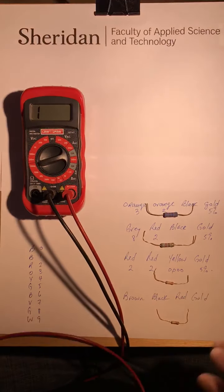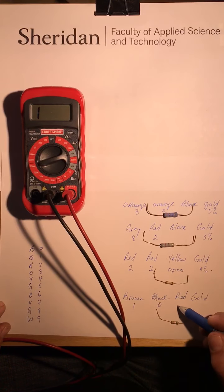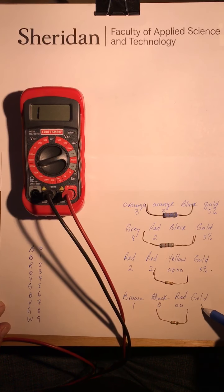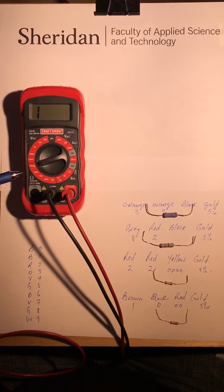In the last one here, I've got brown which is one, black which is zero, red which represents two zeros, and gold is five percent. So this should be about a thousand ohms.